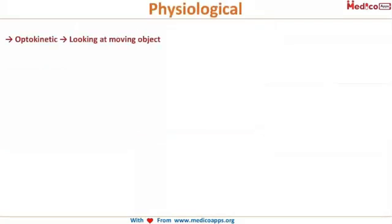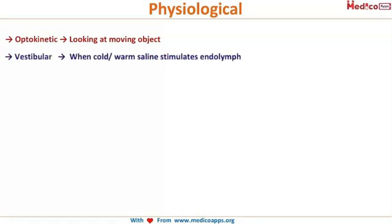Optokinetic nystagmus occurs when looking at a moving object such as a rotating drum with lines — your eyeballs exhibit a mild movement, which is normal. Vestibular nystagmus occurs when cold or warm saline stimulates the endolymph. End-gaze nystagmus occurs when the eyeball goes to an extreme point and comes back; it is a specific localizing nystagmus.